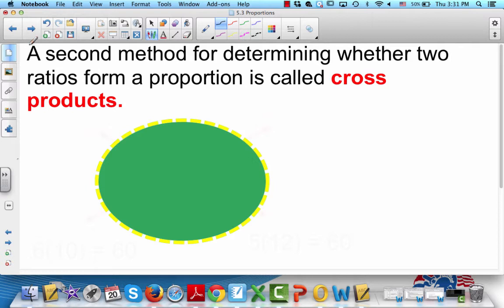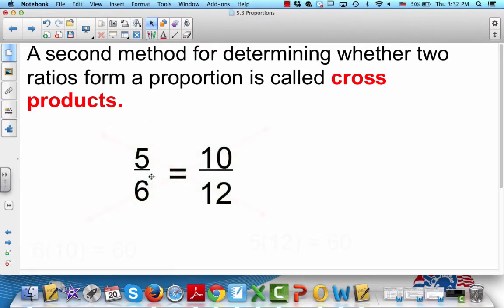The second method, and the one you're going to be using most often, is for determining whether two ratios form a proportion. It's called cross products. Are you familiar with cross products? So you've got 5/6 equals 10/12. The first thing you're going to do is multiply 5 times the 12, and that gives you 60.